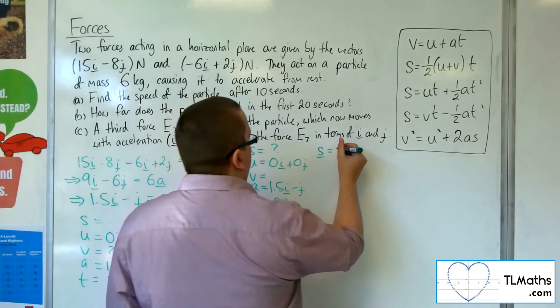We're still accelerating with the same acceleration vector, so 1.5i minus j. I don't know the final velocity. I know the initial velocity is 0i plus 0j. But it's S that I want to find. So I will want the equation that doesn't have V, which is equation number 3. So S is equal to U times T, so that times 20, which is just 0, plus 0.5 times A times T squared, so times 20 squared.